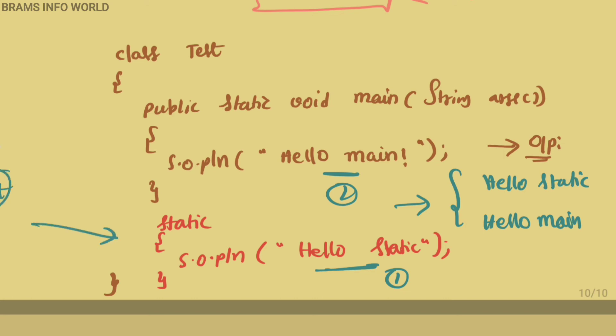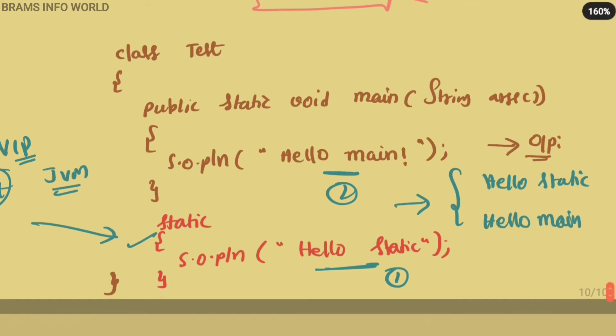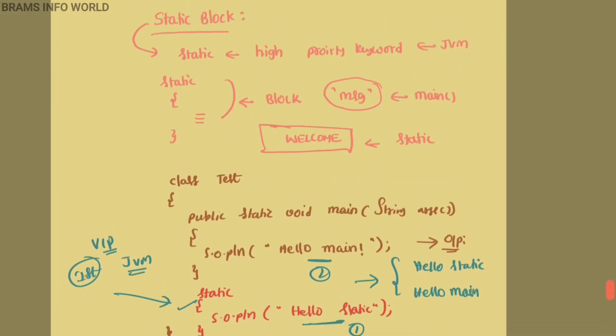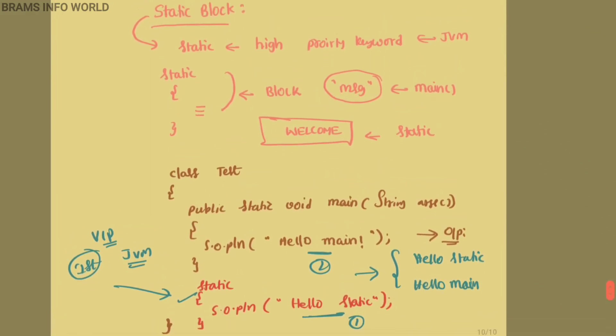This is the way we use the static block. Static block is always first priority like VIP. JVM gives high priority for the static followed by main. This is how we create static block in Java language.